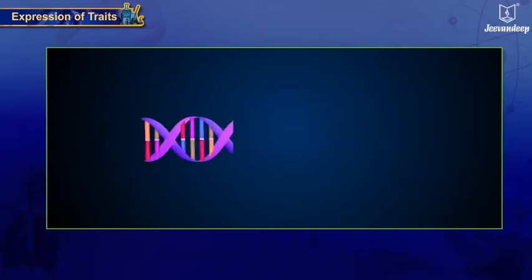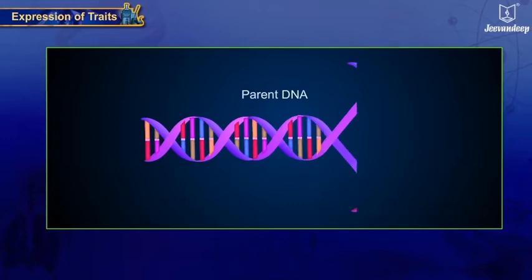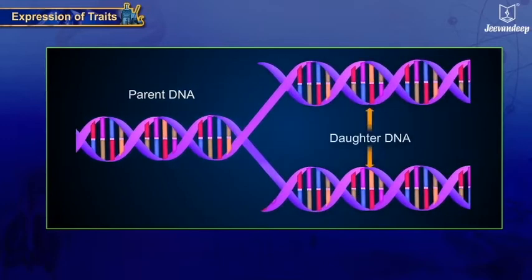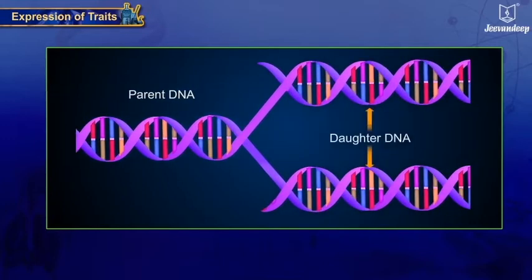When the cell reproduces, it passes all of this information onto the daughter cells, and thus traits are passed on to offspring. This happens through DNA copying.